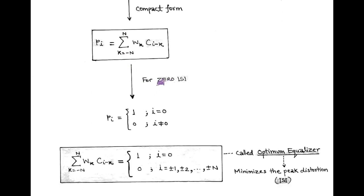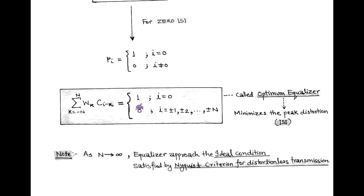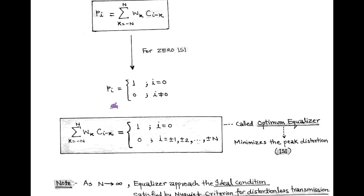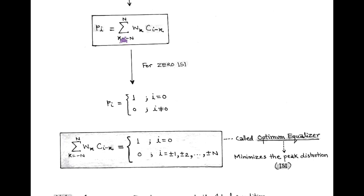Now, in order to get zero inter-symbol interference, the value of PI must be equal to 1 for I equal to 0 and 0 for I not equal to 0. This requirement is fulfilled after equalization at the receiver side. For this, at I equal to 0, the value of summation WK C(I minus K) is equal to 1, and at I equal to plus minus 1, plus minus 2, up to plus minus n, the value of summation must be equal to 0. This adjustment makes an optimum equalization that minimizes the peak distortion and corresponding inter-symbol interference.